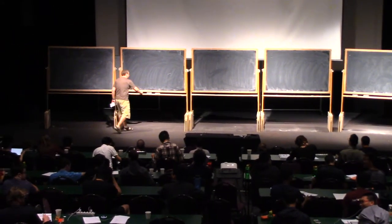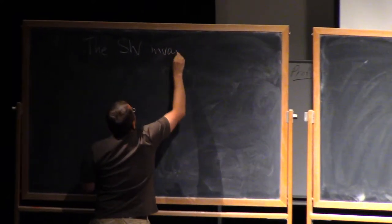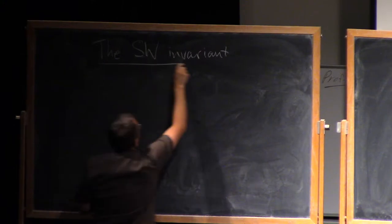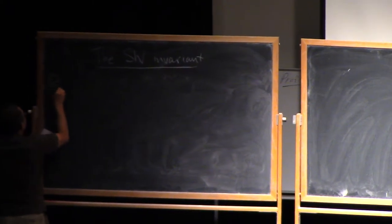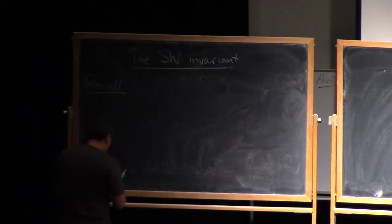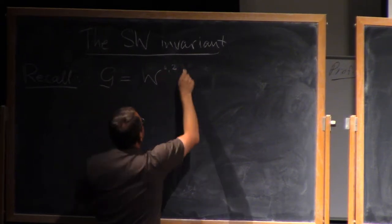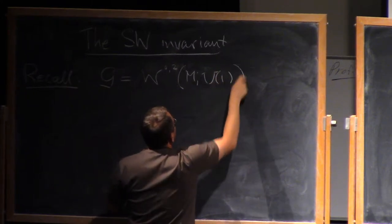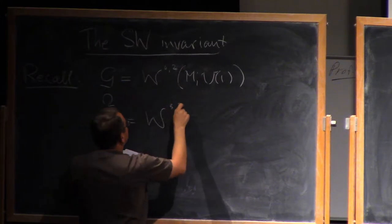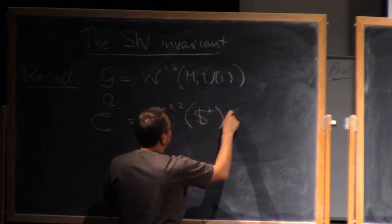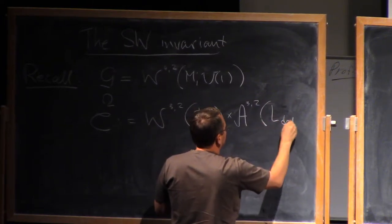I want to talk today about the Seibach-Witten invariant. That's the whole point why we did all this stuff in the previous lectures. So recall, we had the gauge group, this was space of maps from M to U(1), and this acts on C, which was W^{3,2} S^+ times A^{3,2}.